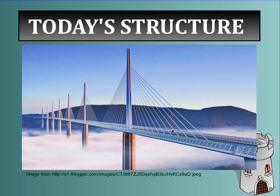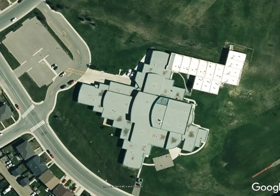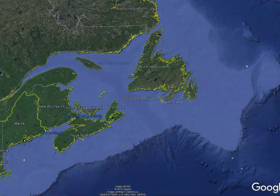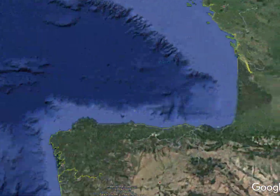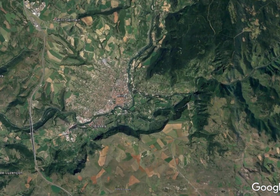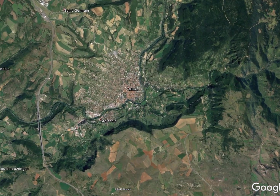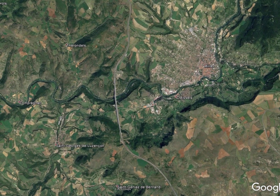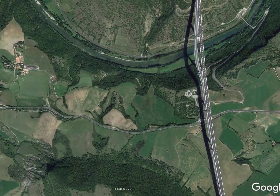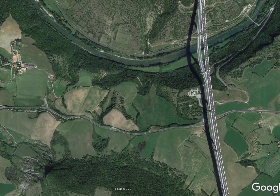Today's featured structure looks like it's above the clouds in this photo - it's an amazing piece of architecture. It is located in Europe, in France, just outside of a town called Millau. This bridge was built to bypass heavy traffic going through the town, and it spans a huge distance.